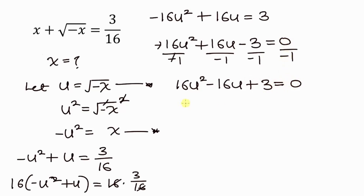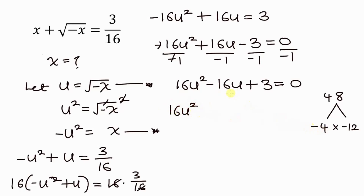This quadratic can be factorized. I'll take 16 multiplied by 3 to get 48. The factors of 48 we'll use are negative 4 and negative 12, because their sum gives negative 16. So I rewrite negative 16u as negative 4u minus 12u, giving: 16u squared minus 4u minus 12u plus 3 equal to 0.